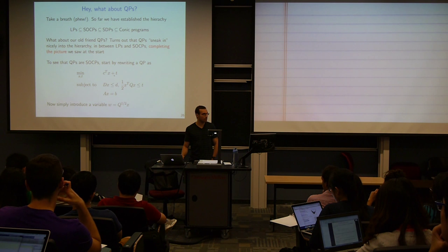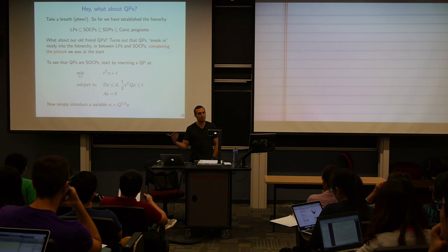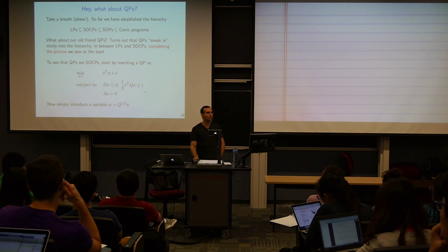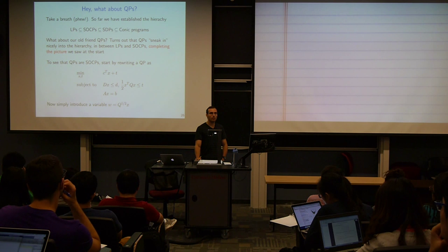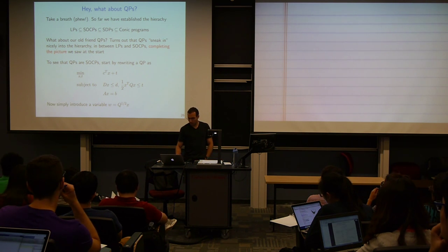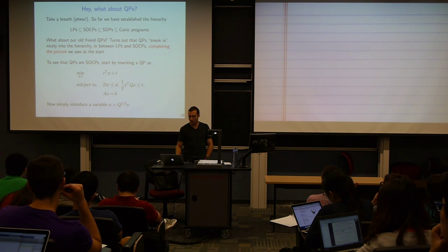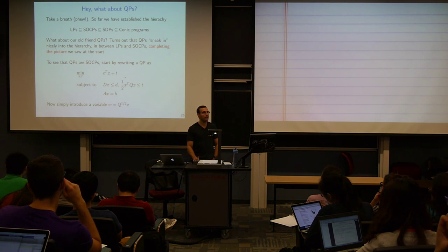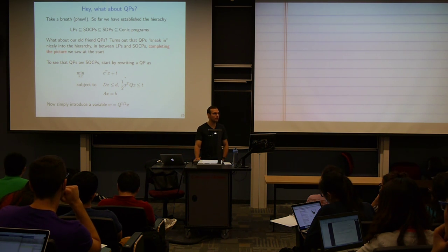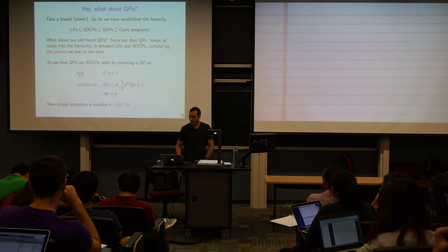You can see this by rewriting a QP by introducing a dummy variable t. Where you would have one-half x-transpose Q x in the criterion, replace that with t, where t is an auxiliary variable, and add a constraint that one-half x-transpose Q x is less than or equal to t. Clearly that hasn't changed the problem, because if we're minimizing over x and t, making t as small as possible subject to this constraint has the same effect.